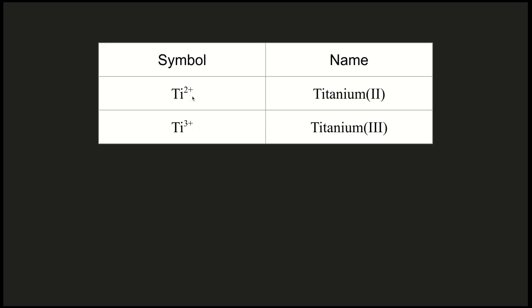When titanium has a 2-plus charge, we call that titanium 2, and we write the 2 in Roman numerals inside of parentheses. For titanium with a 3-plus charge, we have written the 3 inside of parentheses as Roman numerals. So this is called titanium 3.